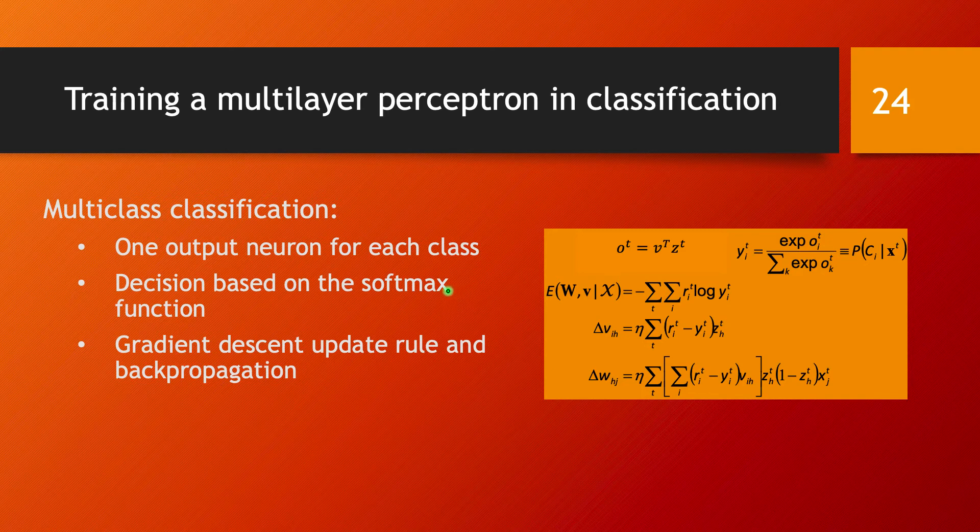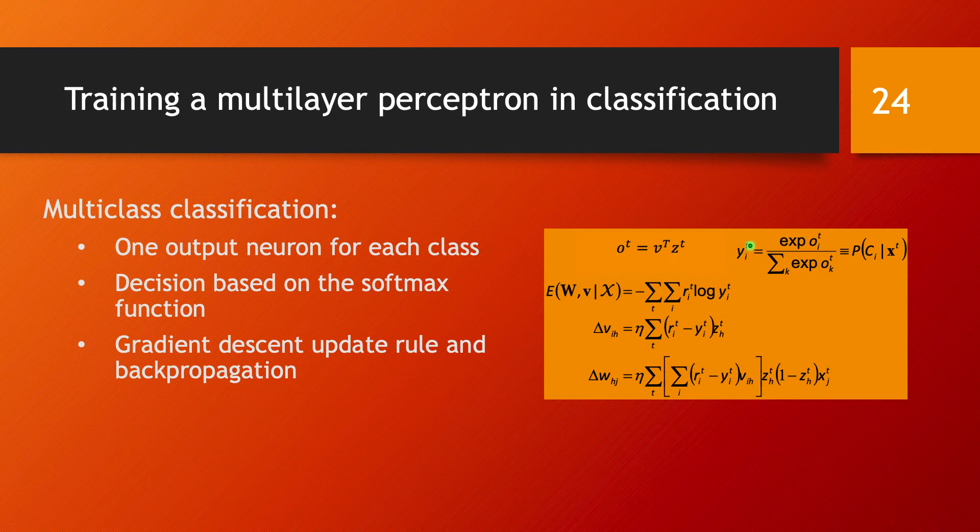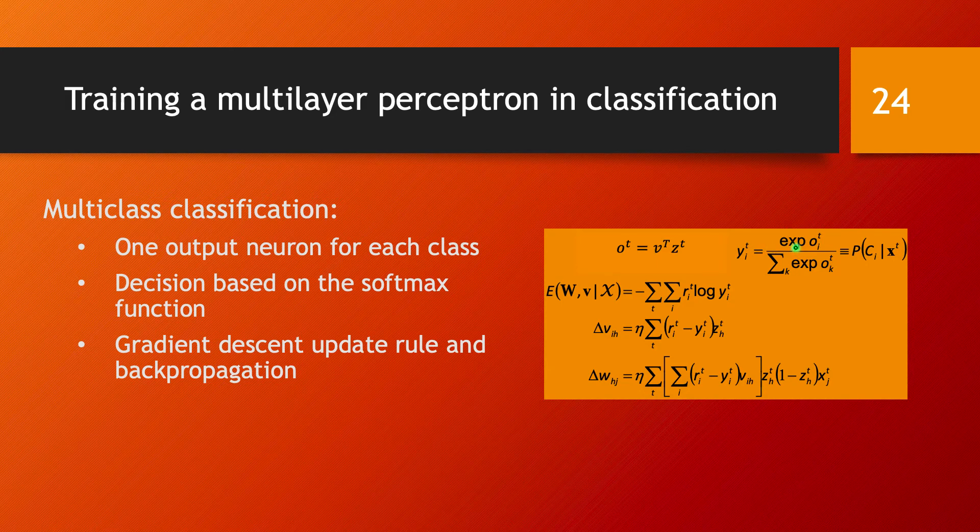So what this means is that we will have in the output layer a calculation of this type. The output is going to be a linear combination of the values of the hidden layer. And then the output in neuron i is going to be the softmax function applied to these output values we calculated.